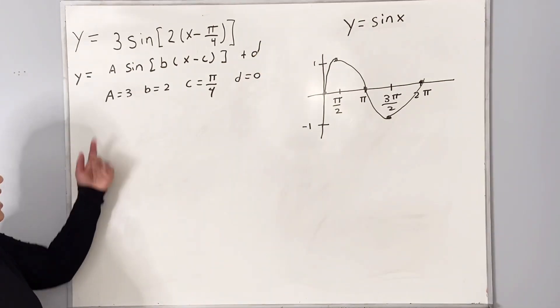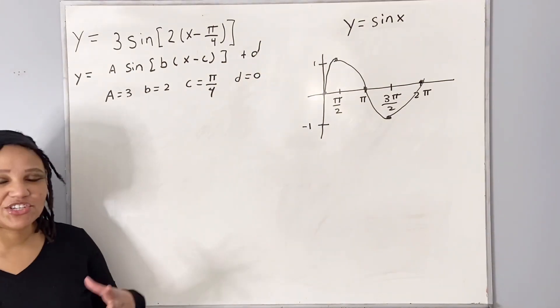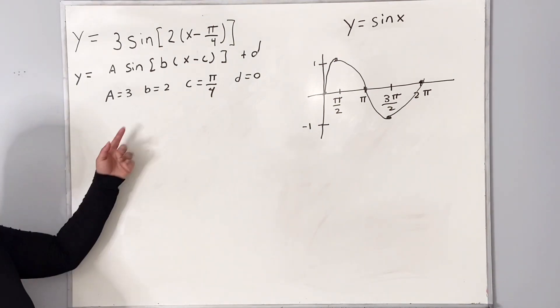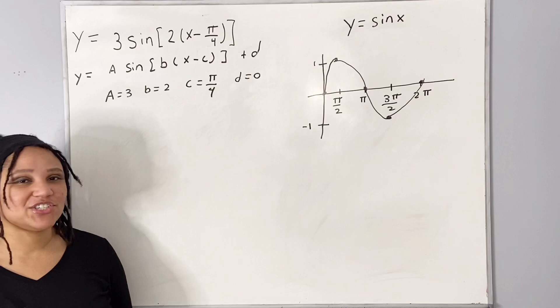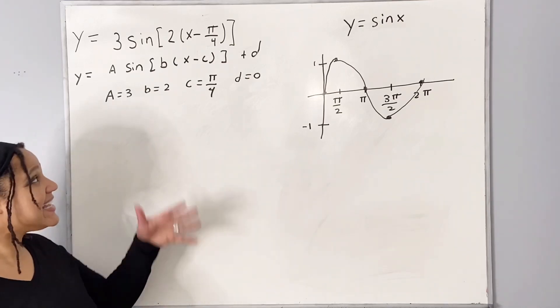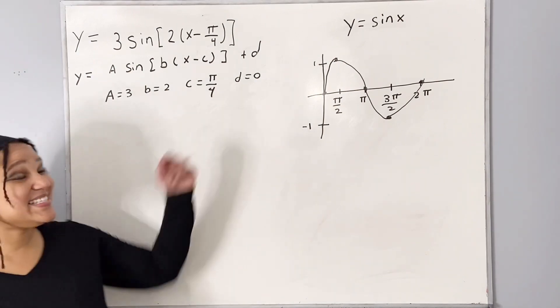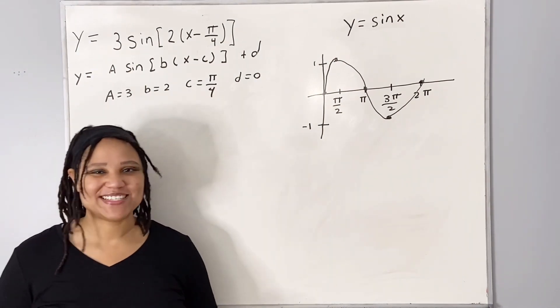So a is our vertical stretch or compress, and it's also known as our amplitude. B is our horizontal stretch or compress. And c will determine whether the graph shifts right or left, and d determines whether the graph will shift up or down.